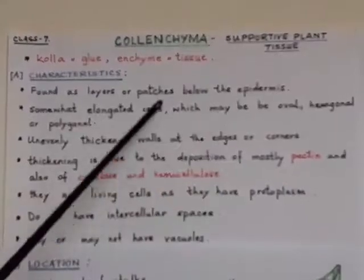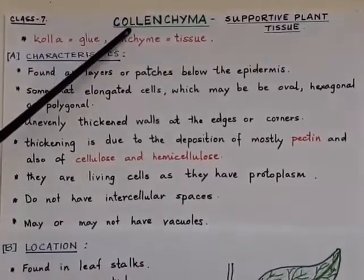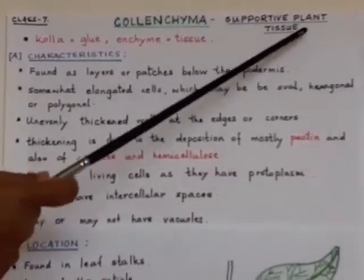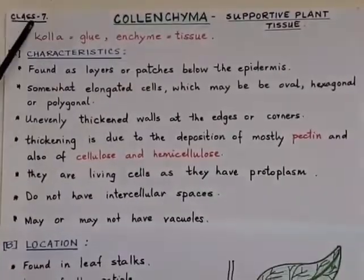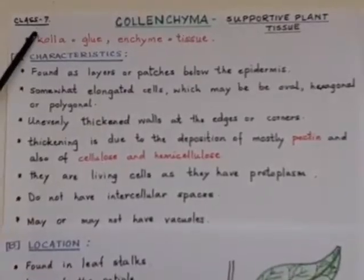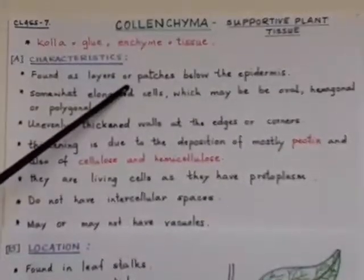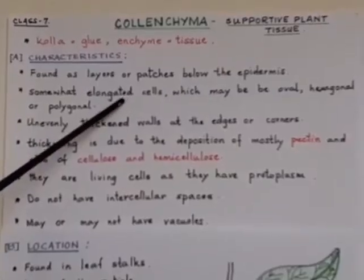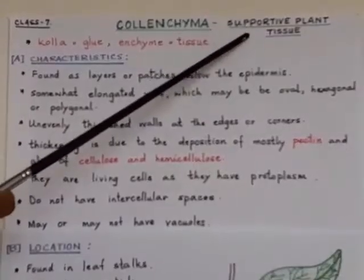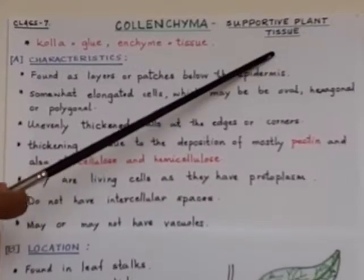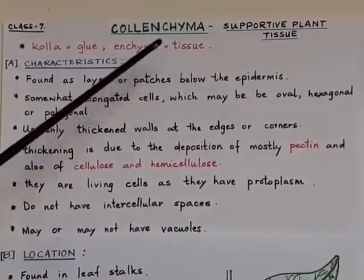This was all for today related to the second type of supportive plant tissue, that is colenchyma, for class 7 biology. In the next video, we will learn about the third and last type of supportive plant tissue, which is known as sclerenchyma. Thank you.